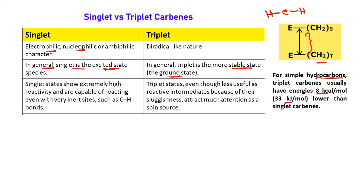Singlet states show extremely high reactivity — this is expected because singlet is an excited state species, so it will have more reactivity. Singlets are capable of reacting even with very inert sites. For example, breaking a C–H bond is very rare in organic chemistry, but when using singlet carbene that is also possible.